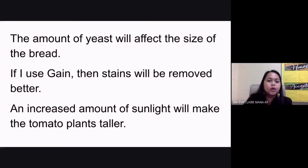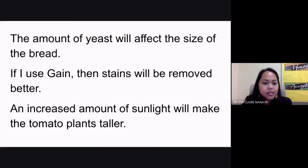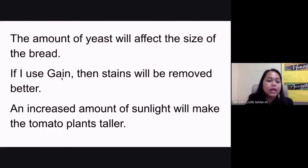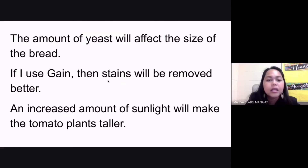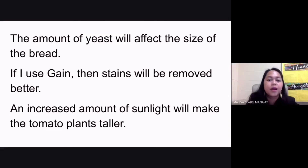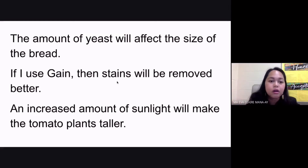Hypothesis number two: if I use Gain, then stains will be removed better. Your independent variable is Gain — the detergent — and your dependent variable is stain removal. Control variables or constants for this hypothesis include the type of stain, the amount of stain, and the type of cloth being used.